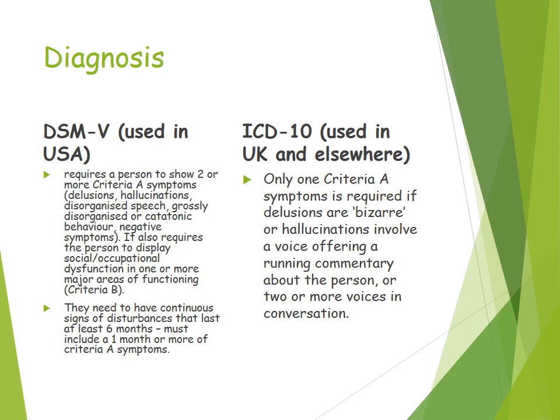The DSM-5 also requires the person to display social and occupational dysfunction in one or more major areas of functioning — such as interpersonal relationships or self-care — which is criteria B. Criteria C is the duration: they need to show continuous signs of the disturbance for at least six months, including at least one month of criteria A symptoms. That is the diagnostic manual used in America. In the UK and elsewhere, the ICD-10 is typically used, which requires only one criteria A symptom if delusions are bizarre or hallucinations involve a voice offering a running commentary of the person.